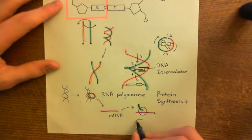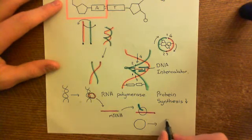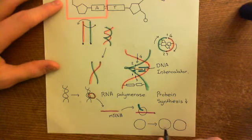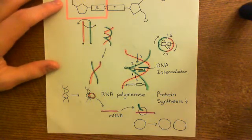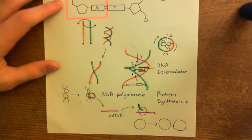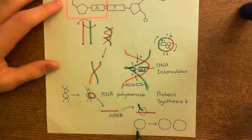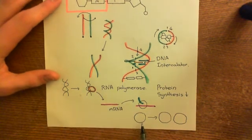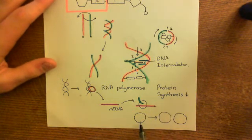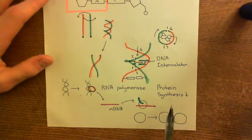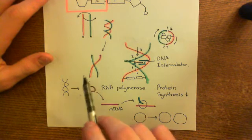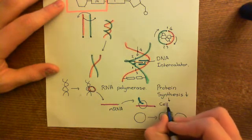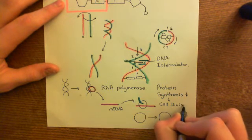But if you've got a cancer cell here which is rapidly dividing, continuously going through the process of dividing into two, then basically both of these daughter cells have to have a copy of every single protein that is essential for life. So all of the enzymes involved in metabolism, all of the receptors, all of the signaling cascade proteins, all of those are going to have to be copied. You're going to have to make a duplicate copy.